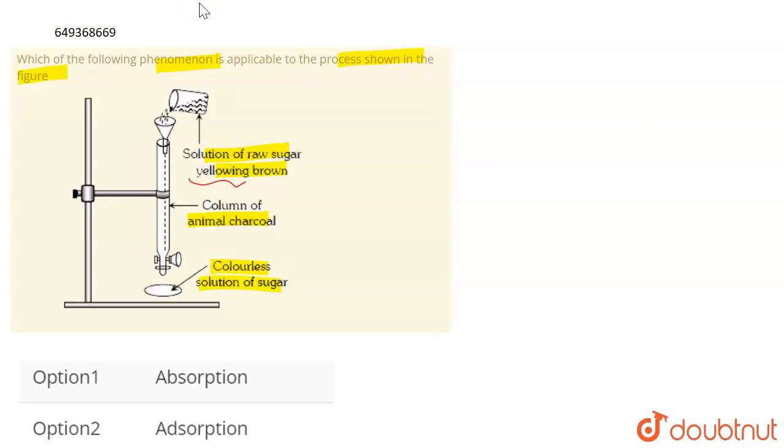When we add raw sugar solution, which is yellowish brown color, and we add it to animal charcoal column.